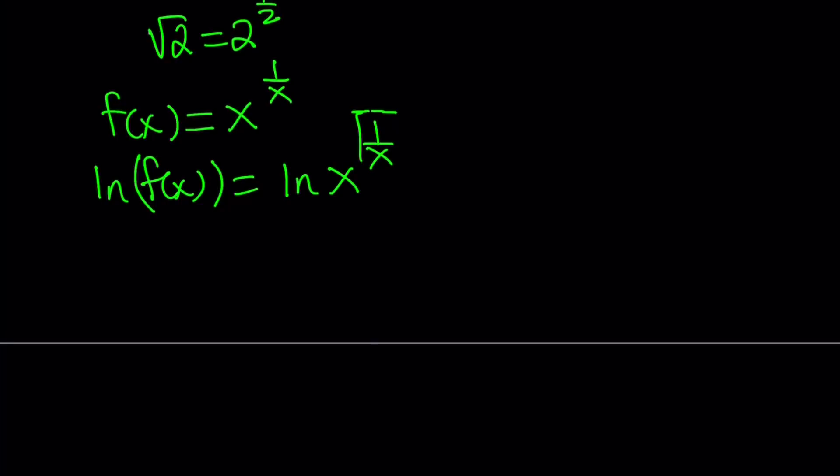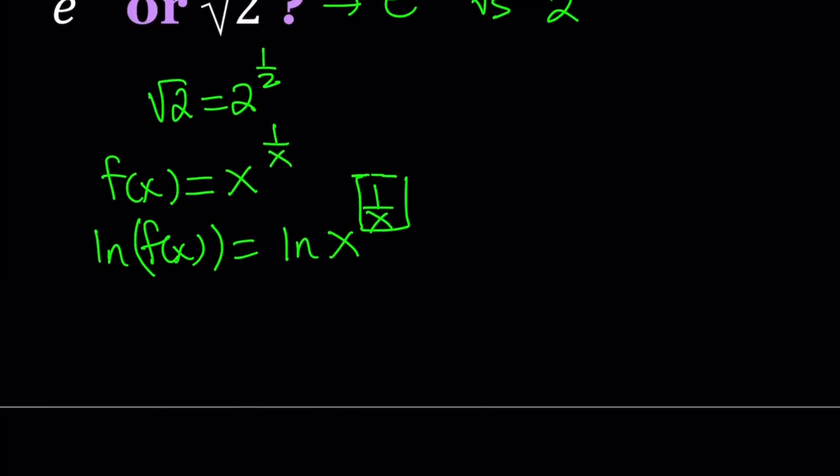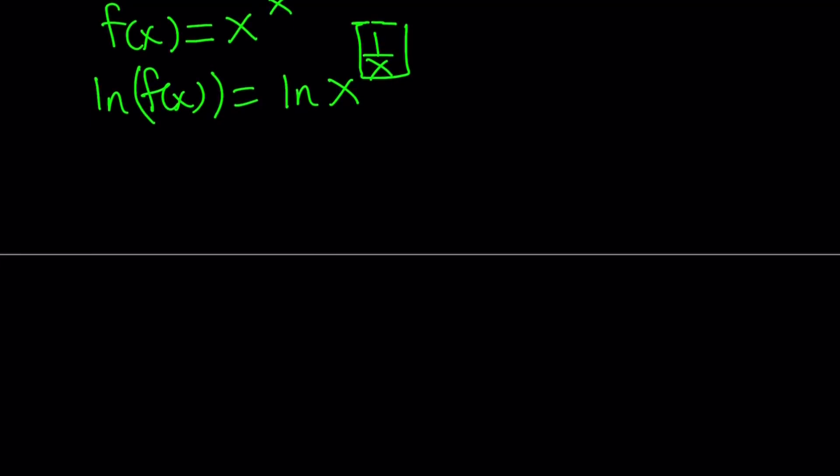Now, we can go ahead and move this 1 over x to the front. That's the whole idea. If you have a function whose base and exponents are both variables, then you can't use the standard rules. So you have to turn it into something that you already know. So here we get ln of f of x equals 1 over x times ln x, and obviously we can write this as ln x over x.